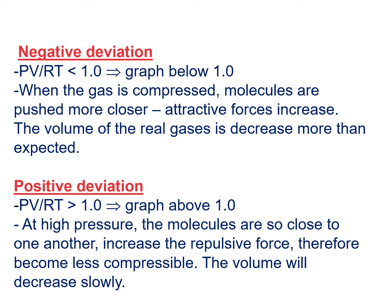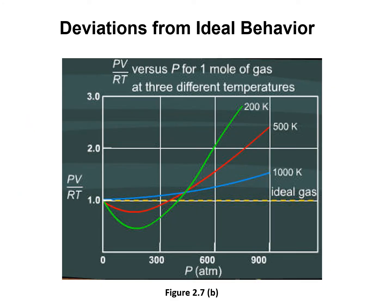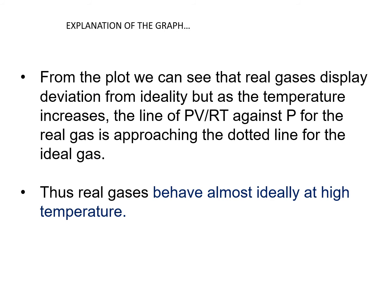Hence, the volume will decrease slowly. Figure 2.7b clearly explains that real gas displays deviation from ideality as the temperature decreases from 1,000 Kelvin to 200 Kelvin. Real gases display deviation from ideality, but as the temperature increases, the line of PV over RT against pressure for the real gas approaches the dotted line for the ideal gas. Therefore, real gases behave almost ideally at high temperature.